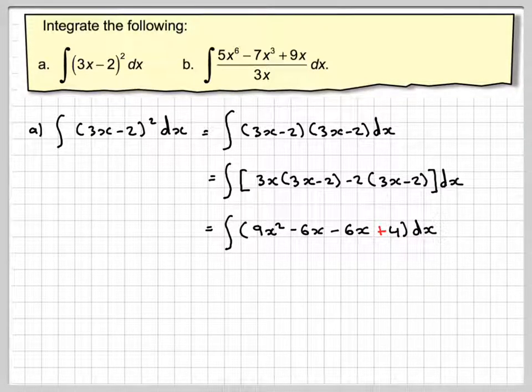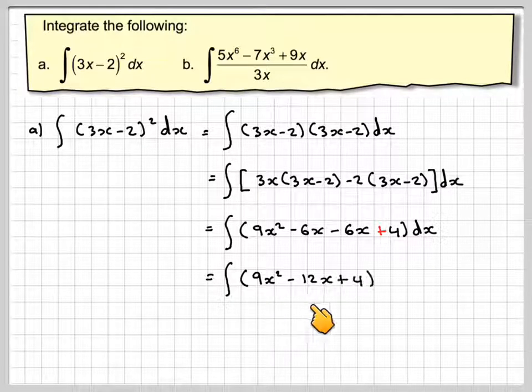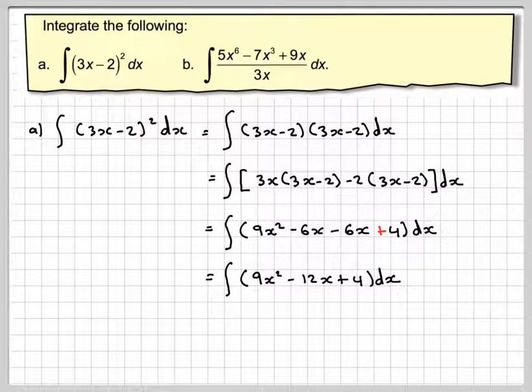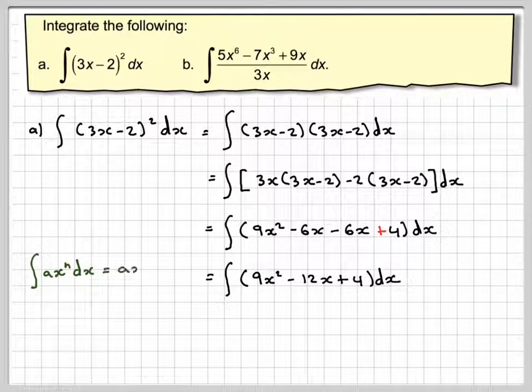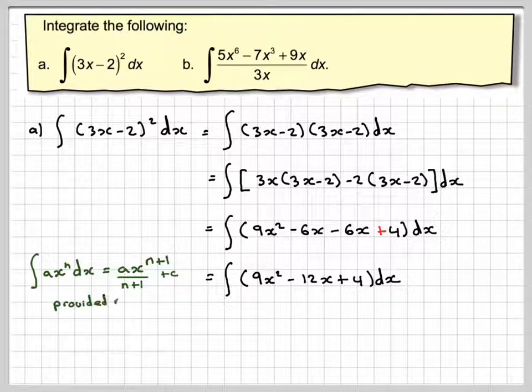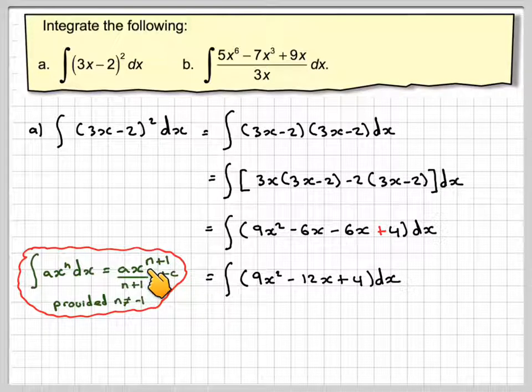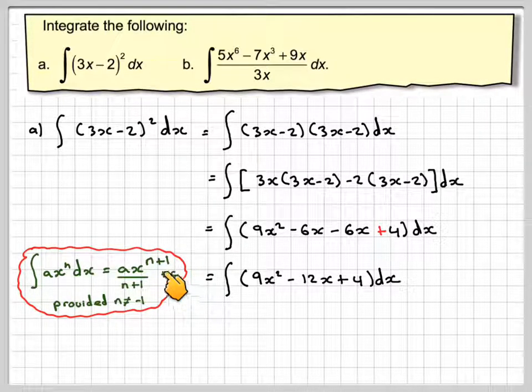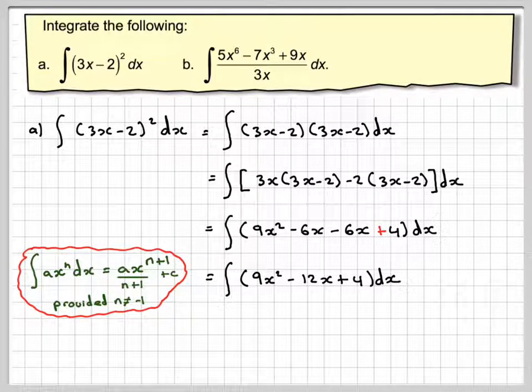Collecting those two like terms together, we get the integral of 9x² - 12x + 4 dx. Now some of you will be able to go from here straight to here in one go. Now what we do is the process of integration. ∫ax^n dx = ax^(n+1)/(n+1) + c. Add 1 to the power and divide by the new power. n is not allowed to be equal to -1.